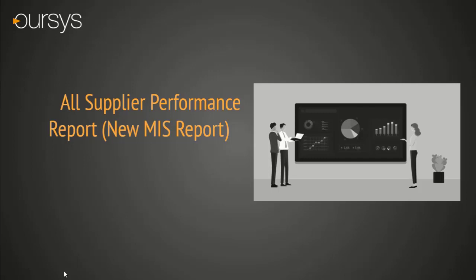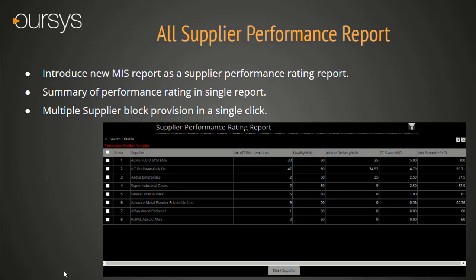All Supplier Performance Reports. This is a summary report of supplier performance. This new MIS report shows all supplier performance ratings in a single view. In this report, we have shown the total number of GRN line item counts, delivery performance in percentage, quality percentage, and final net score. This report is very important for the purchase team to see all performance in a single report. We have also given provision to block the supplier where we don't want to do further business or for temporary restriction.